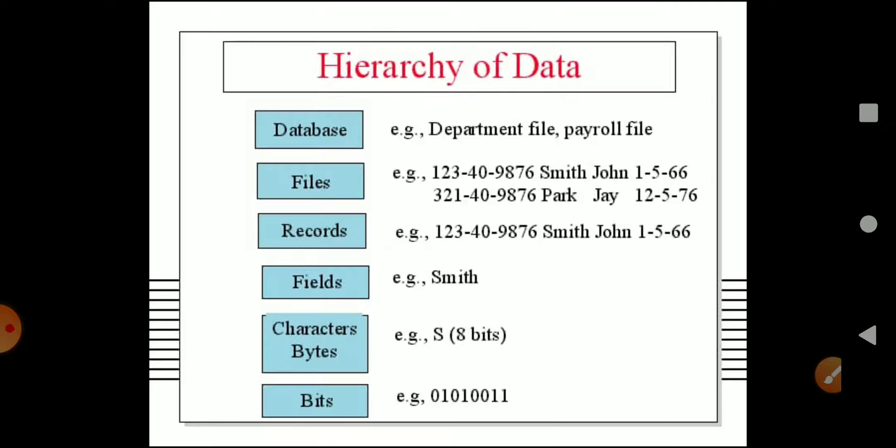For example, a field could be a name — say 'Sumit.' The complete information of Sumit — his full details — would be known as a record. Now, just like Sumit, when you combine N number of contacts together, that collection will comprise a file. A database is where you are going to keep that file.